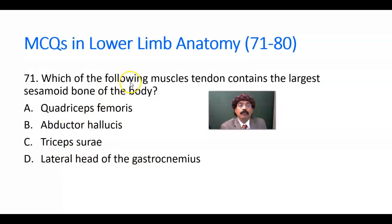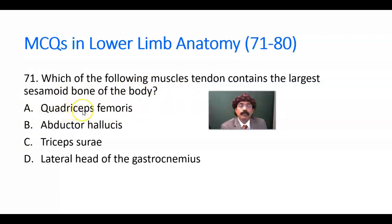Which of the following muscle tendons contains the largest sesamoid bone of the body? The answer should be the quadriceps femoris. The largest sesamoid bone in the body is the patella.